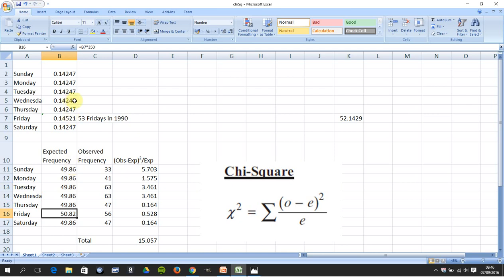On Friday it's slightly different because that's going to refer to b7, which is 0.14251, reflecting the 53 over 365.